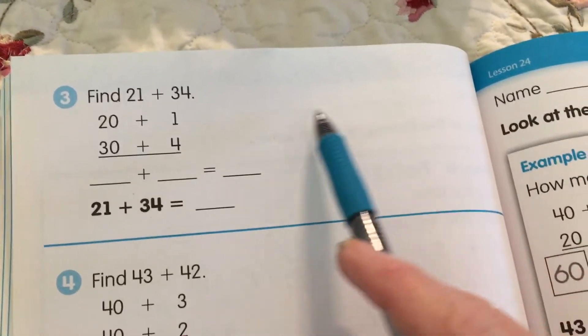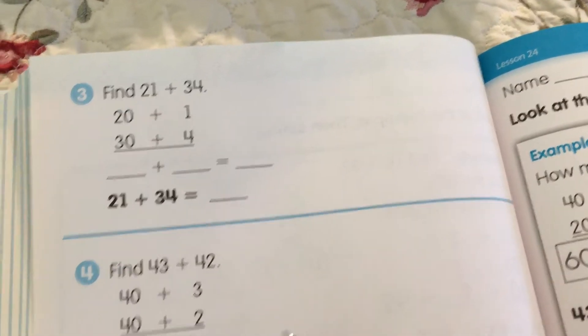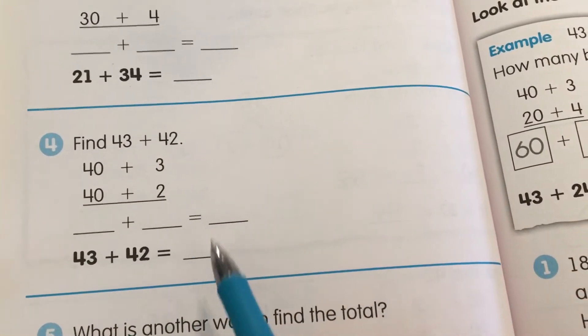You're going to draw your number bond here for 21 and 34 and add them together. Same thing here. Number bond. You're going to add them together.